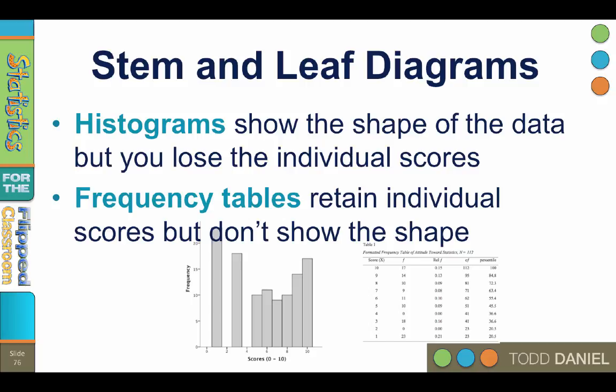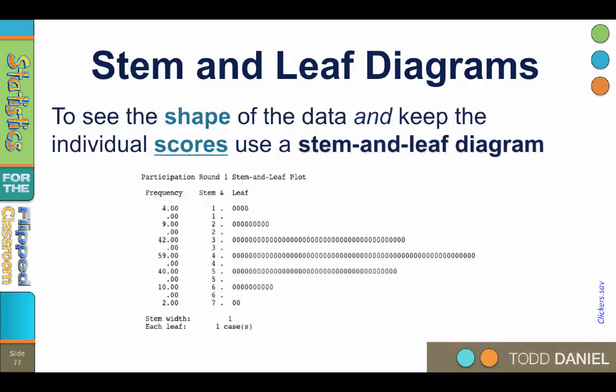The table gives us individual frequencies, but we can't imagine how they will look when they're plotted. To see both the shape and keep the individual scores of the data, use a stem and leaf diagram.